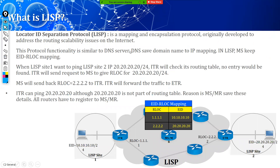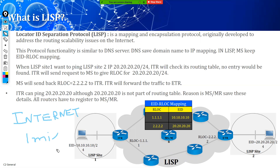LISP is a mapping protocol. The purpose of LISP is to reduce the routing table size, as we discussed earlier for our public internet. The size is around 1 million routes in the BGP routing table of our internet.